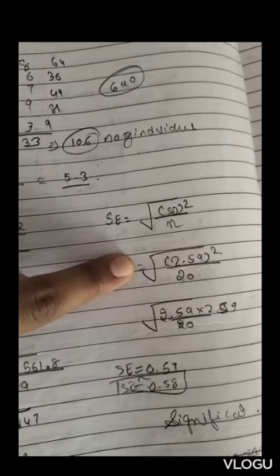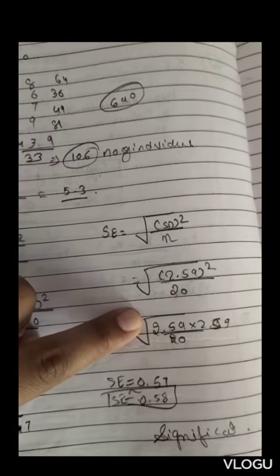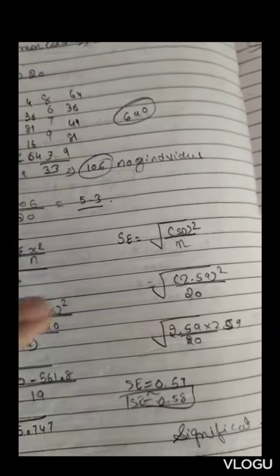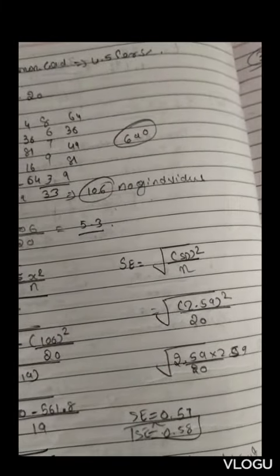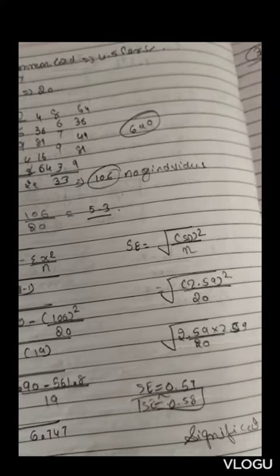So our first question is solved: mean is 5.3, standard deviation is 2.59, and standard error is 0.58. For the second question, it differs due to sample-to-sample variation.